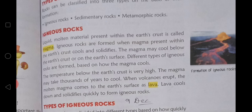When magma is present within the earth's crust, it may cool below the earth's crust or on the earth's surface. Different types of igneous rocks are formed based on how the magma cools.